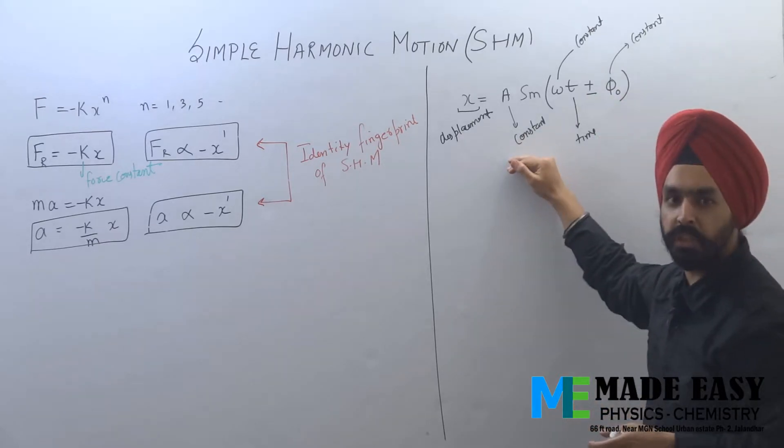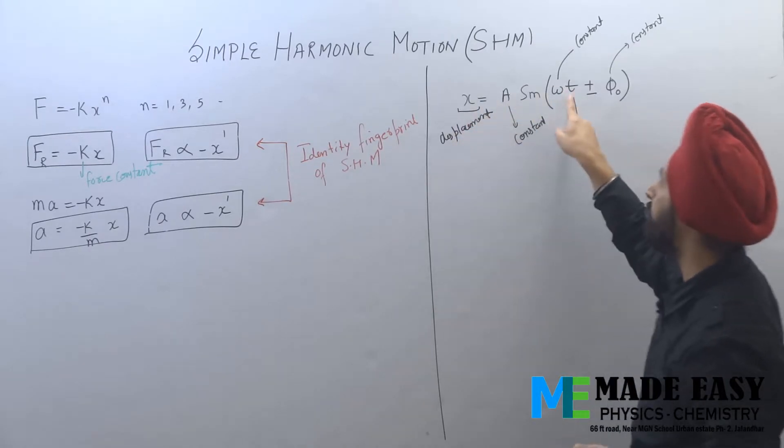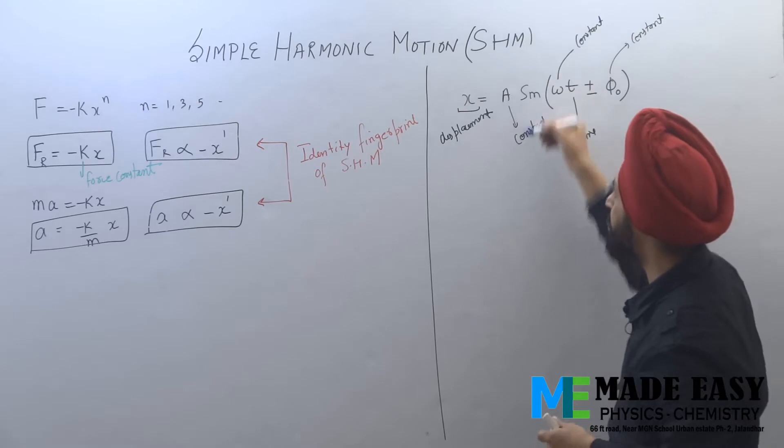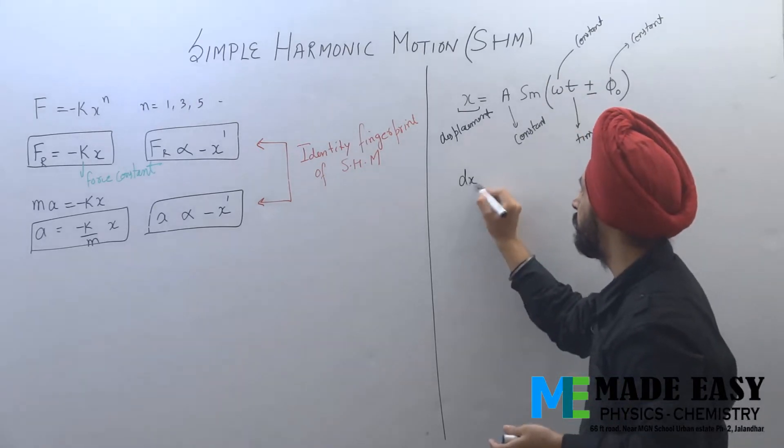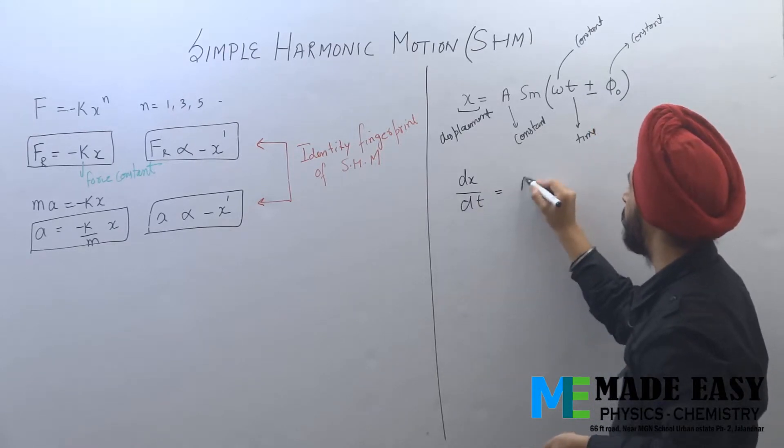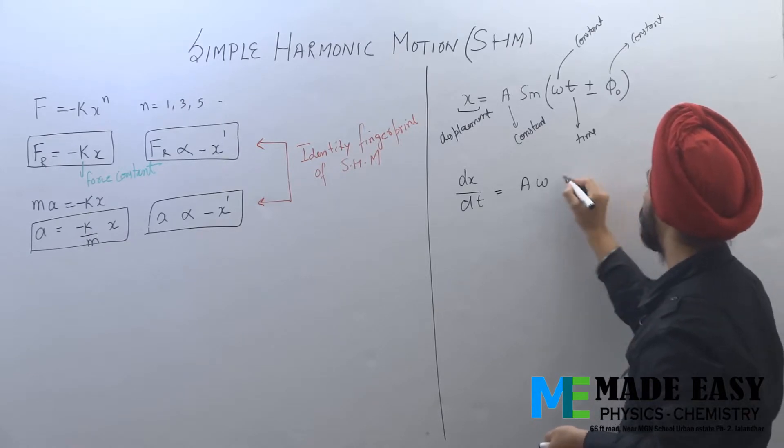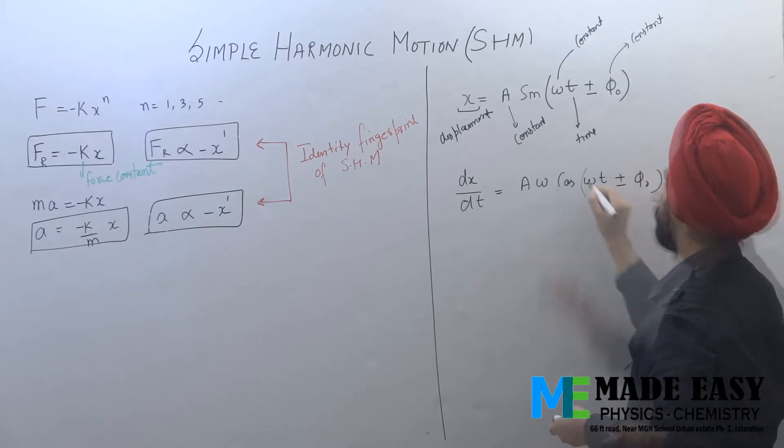Don't go into the meaning of this equation. It's simply an equation between displacement and time. Other things are constant. Now, if I differentiate this equation, what I'll get is dx by dt. Just focus on the mathematical part. What I'll get is A omega cos omega t plus or minus phi naught. Simple differentiation with respect to time.